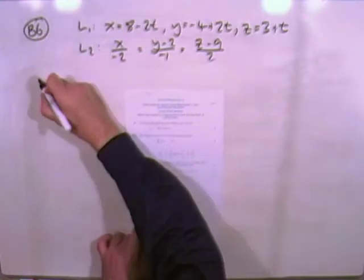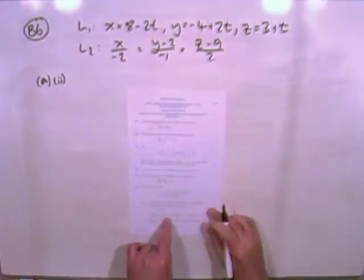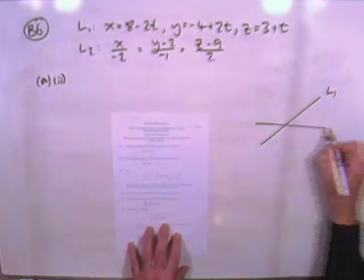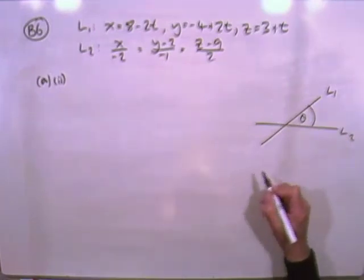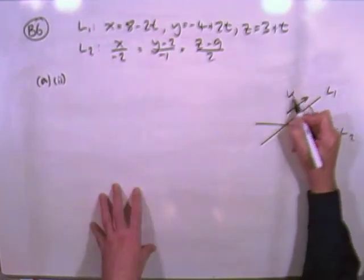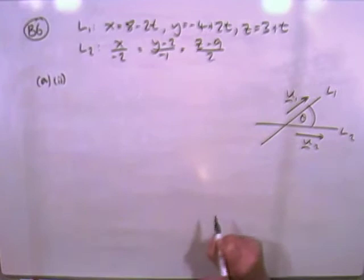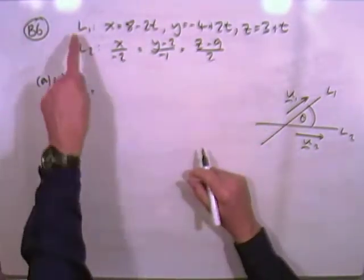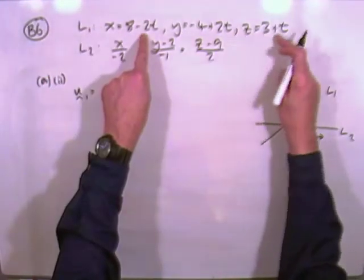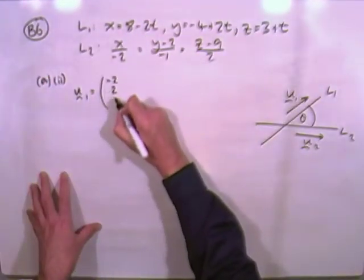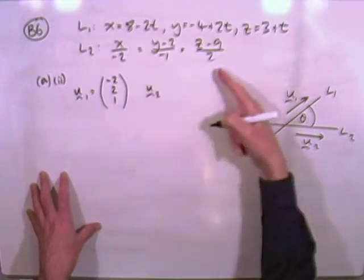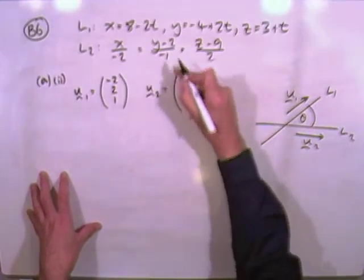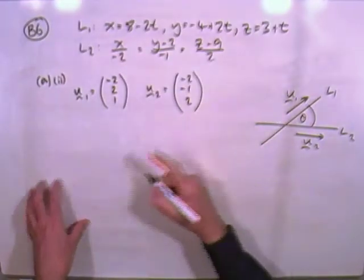All right, now, the second bit, angle between the lines. Well, this actually just goes back to the basics, doesn't it? You've got two lines that are crossing, you've got an angle between them. Well, if you've got the direction vector of the first one and the direction vector of the second line, then you can just use the scalar product. So for the first line, the direction vector with these coefficients of t. And in the symmetric form, the direction vectors with these denominators.